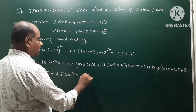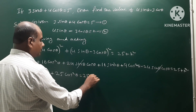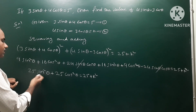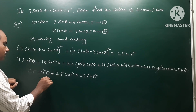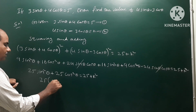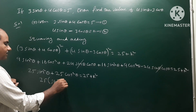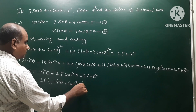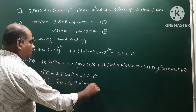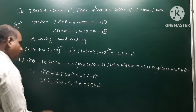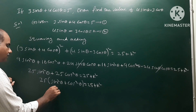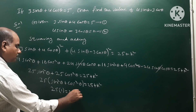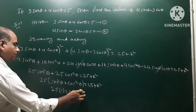That equals the right side: 25 + k². We factor out 25: 25(sin²θ + cos²θ) = 25 + k². Since sin²θ + cos²θ = 1, this gives 25 × 1 = 25 + k².